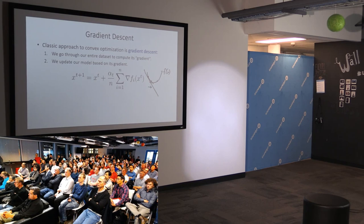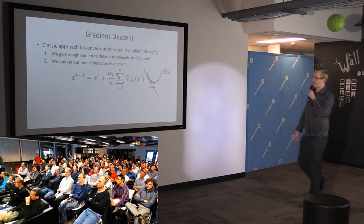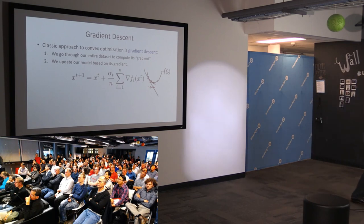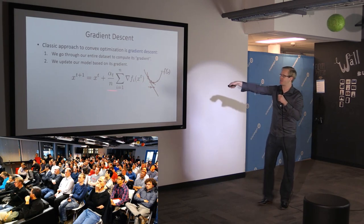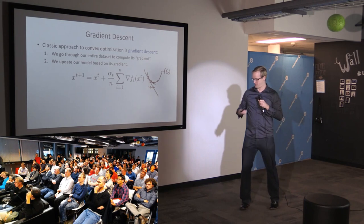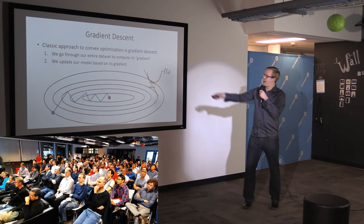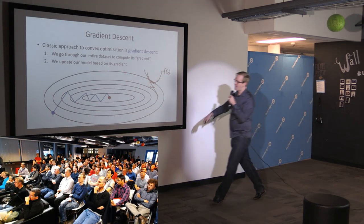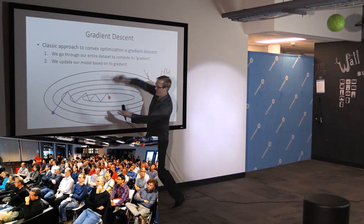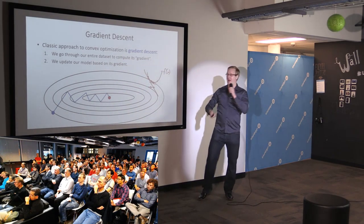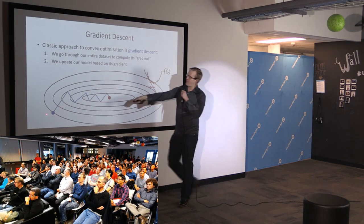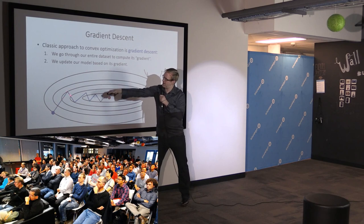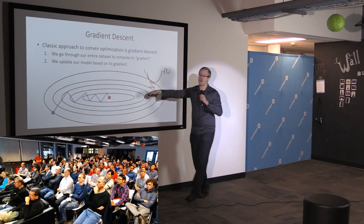The gradient of the average is just the average of the gradients — because derivatives are additive. As a picture: imagine a bowl where the minimum is in the center, like a temperature map where the center is hottest. If we start at the edge, we move inward — inside, inside, inside — and hopefully eventually get to the minimum.